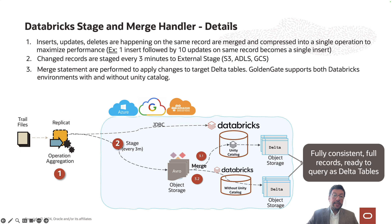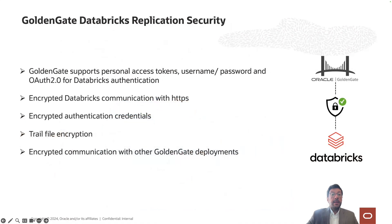You can use GoldenGate Databricks replication targeting Databricks workspaces with or without Unity Catalogs. During our demonstration, I'll be using a Databricks workspace enabled with Unity Catalog. GoldenGate provides the highest level of security for Databricks replication — you can securely store credentials using wallets, encrypt GoldenGate trail files, and traffic between GoldenGate and Databricks will also be encrypted. You can also secure your GoldenGate deployments using certificates.